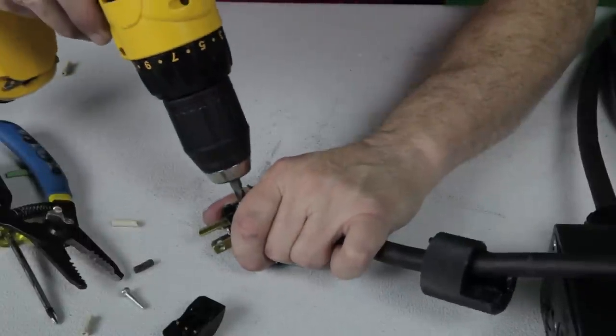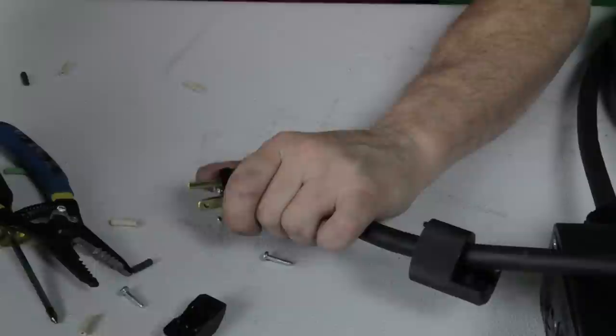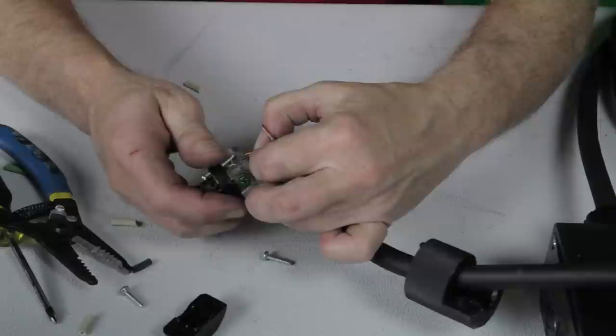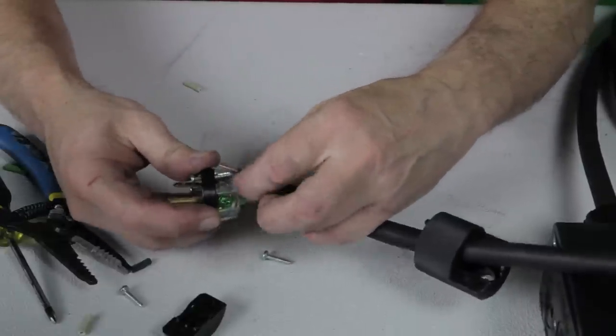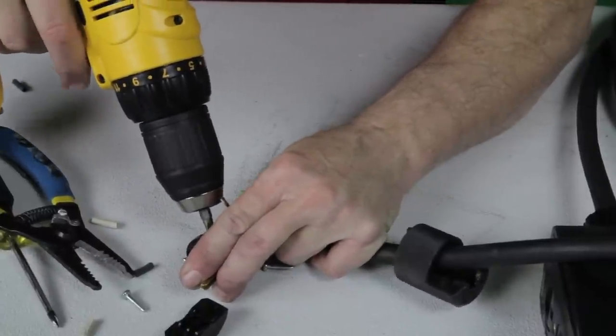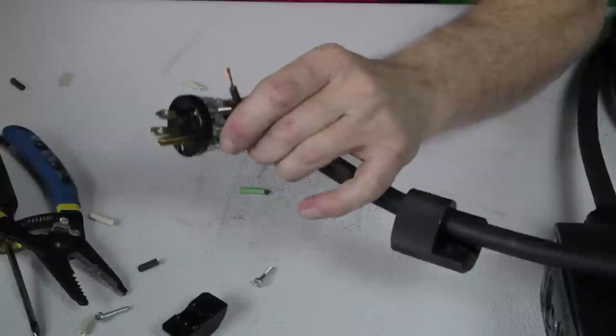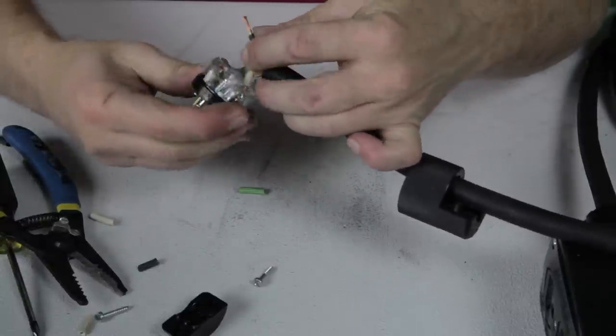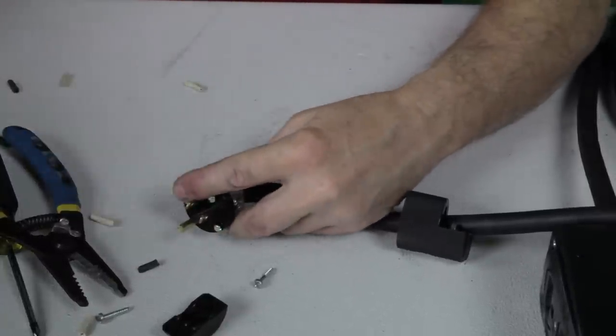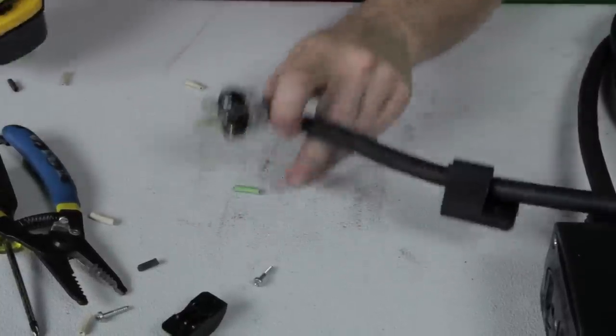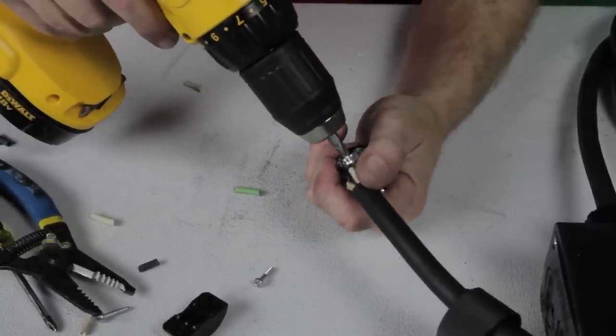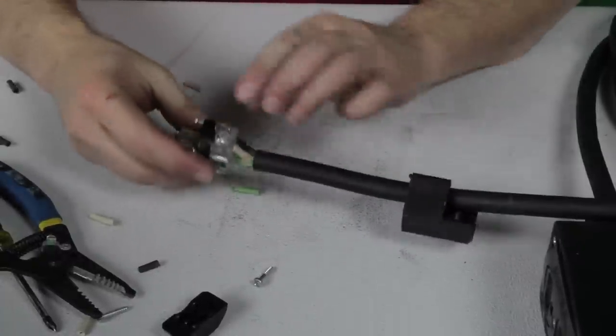And then we'll do our ground first. We will tighten them down with the drill. Make sure they're nice and snug. We'll do our neutral next, and it just goes right into the hole. You just want to make sure that as it goes in, it doesn't fray, and it goes down and seats all the way down inside. Nice and tight. And then the last one will be our load or hot on the gold. Again, it goes down and butts up with the jacket. And then we'll just hold on to this and tighten up that one and tighten up our neutral. And there we have it.